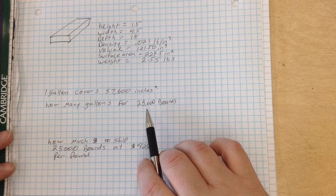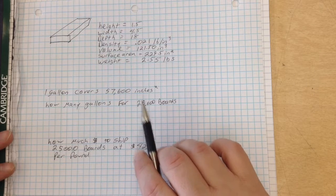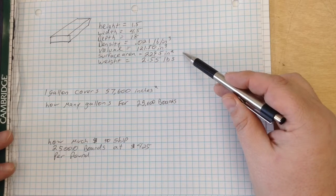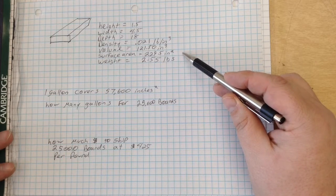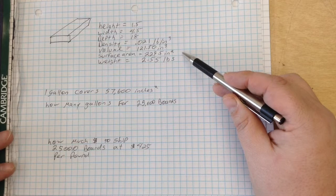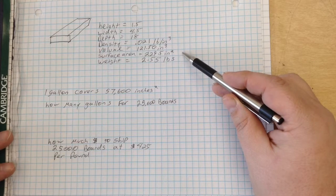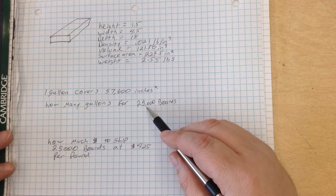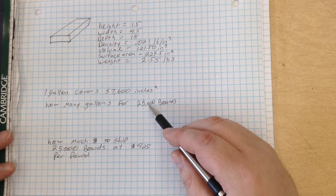how many gallons of paint is it going to take to paint 25,000 boards? Now in our previous video, we figured out that our board has a surface area of 229.5 square inches. We know that we want to paint 25,000 boards, so in order to do this problem,